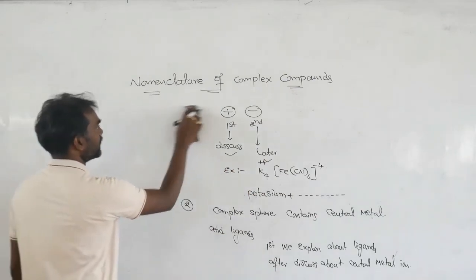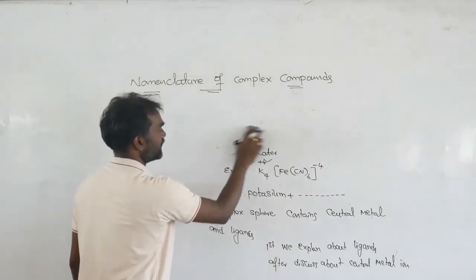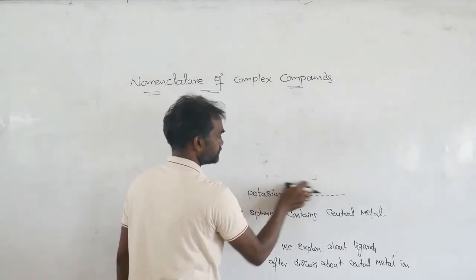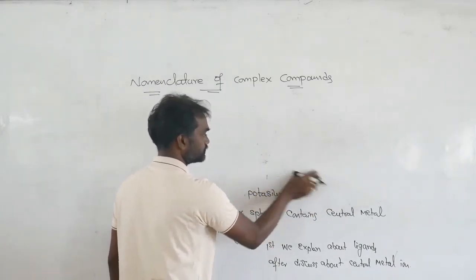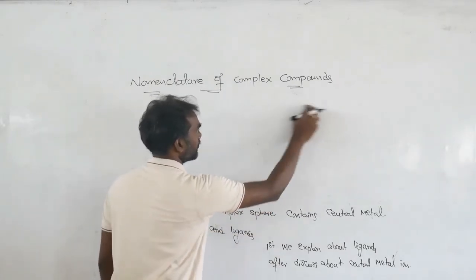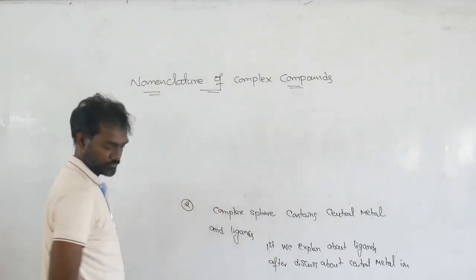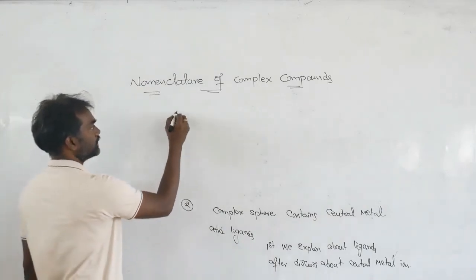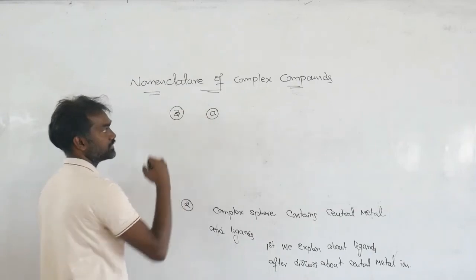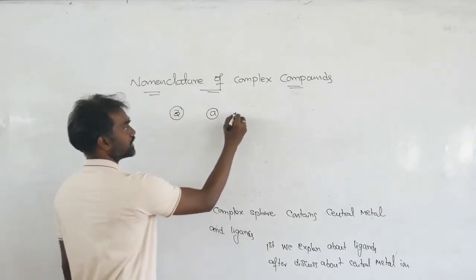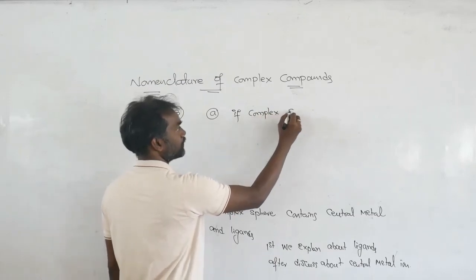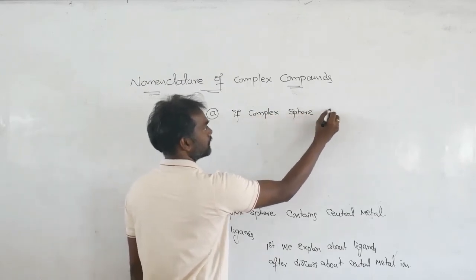So the third point: while naming the complex sphere, first discuss the ligands, then the central metal. Sub-point A: if the complex sphere contains the same type of ligands and there is more than one of them, you must use a numerical prefix.